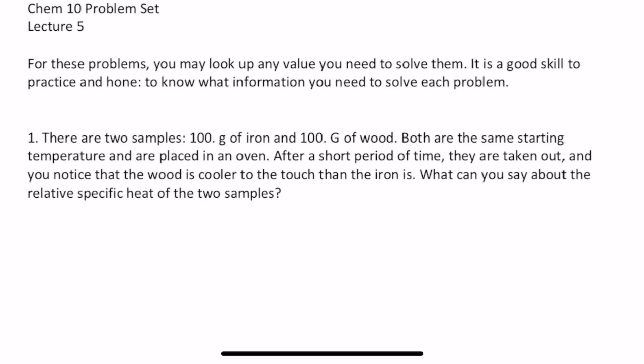There are two samples, 100 grams of iron and 100 grams of wood. Both are the same starting temperature and are placed in an oven. After a short period of time, they are taken out, and you notice that the wood is cooler to the touch than the iron is. What can you say about the relative specific heat of the two samples?